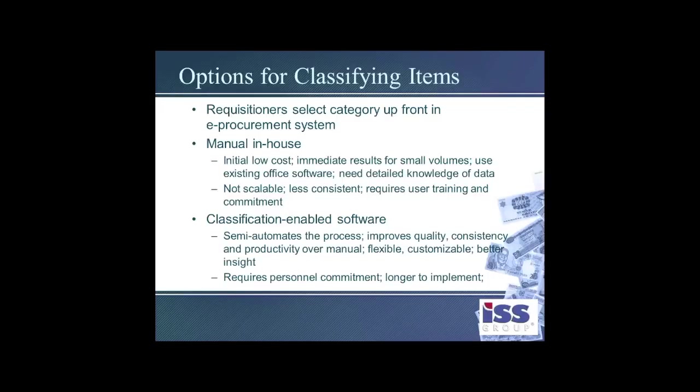There are several options for classification systems. First, you can tell requisitioners to select the category up front as part of an e-procurement system — they need either the training to do so or the system must do it for them. You can set up a manual in-house system, which is low cost and gives immediate results for small volumes, but it becomes inconsistent and requires a lot of user training and commitment. You can also use classification-enabled software, which semi-automates the process and improves quality, consistency, and productivity, but still requires personnel commitment and can take longer to implement.